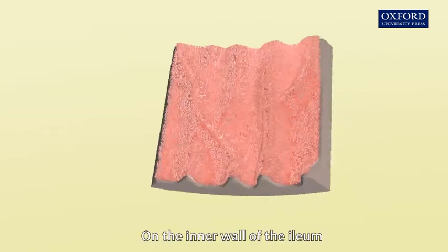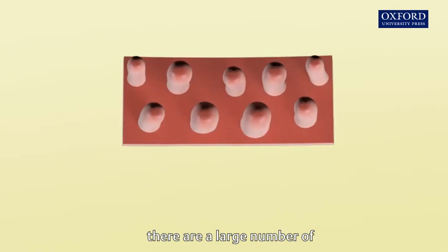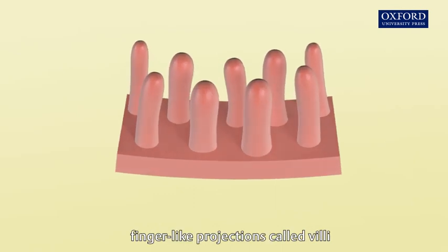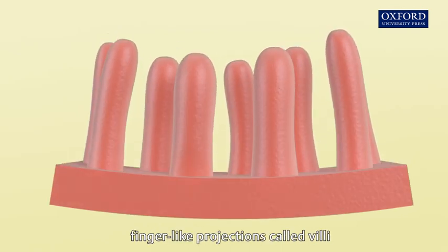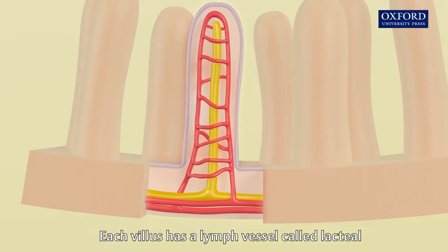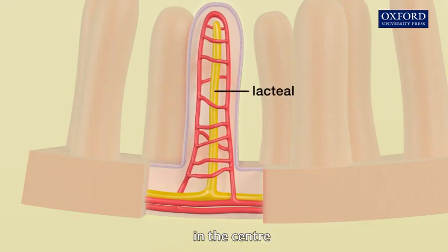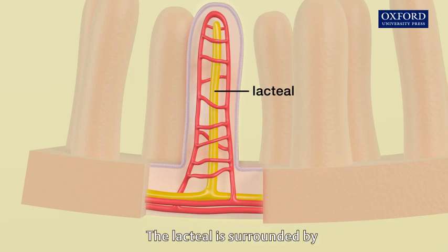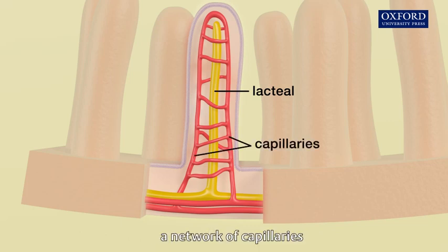On the inner wall of the ileum, there are a large number of finger-like projections called villi. Each villus has a lymph vessel called lacteal in the centre. The lacteal is surrounded by a network of capillaries.